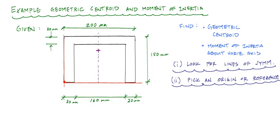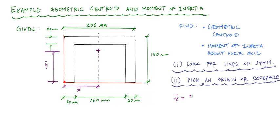Once I have my reference or origin defined and my datum lines, I can define values or variables to locate my centroidal distances. This horizontal distance from the vertical datum represents x-bar, and this vertical distance from my horizontal datum represents y-bar — my centroid in the vertical direction. From symmetry, we know that x-bar is equal to 100 millimeters, which is half of the 200mm width — smack dab in the middle.